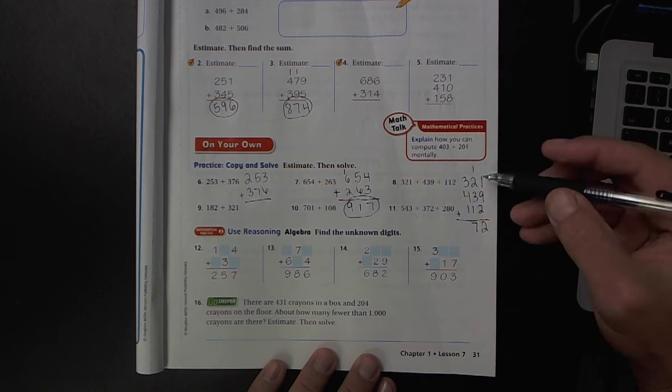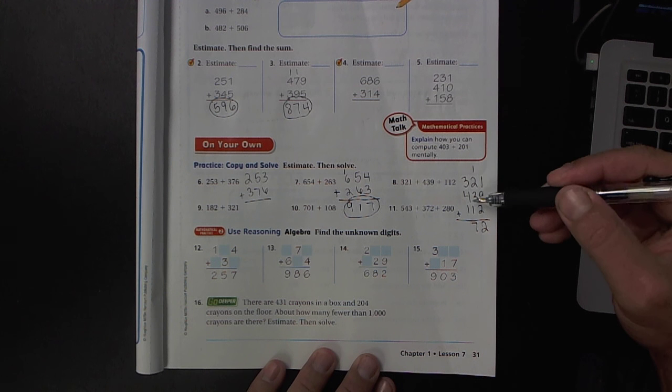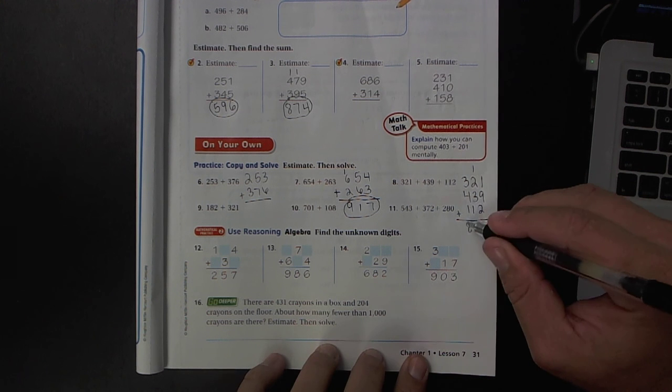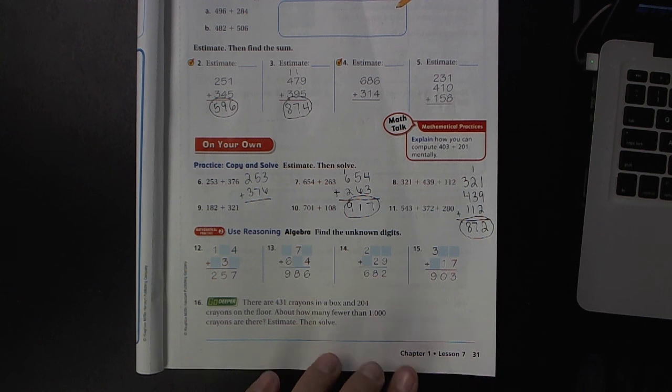And then the last place value, the hundreds, 3 plus 4 is 7, plus 1 is 8. So you can see it's the exact same method, the old school style. There's just more numbers.